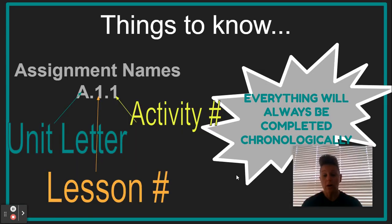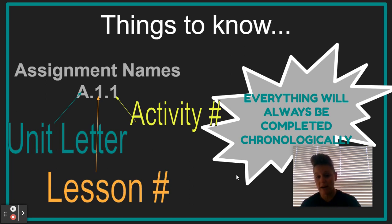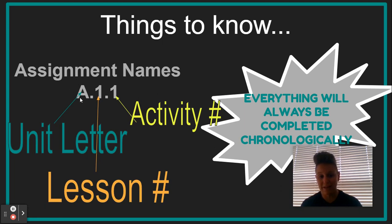We're going to use letters and numbers in this class to name all of the assignments. This helps in two ways: everything for English will have a unique name, and your civics teacher may be using a similar system but with all numbers — English will have a letter in there. The numbers and letters are set up like this: the first part represents the unit, the middle is the lesson number, and the end is the activity number. It's a three-part system: unit, lesson, activity.